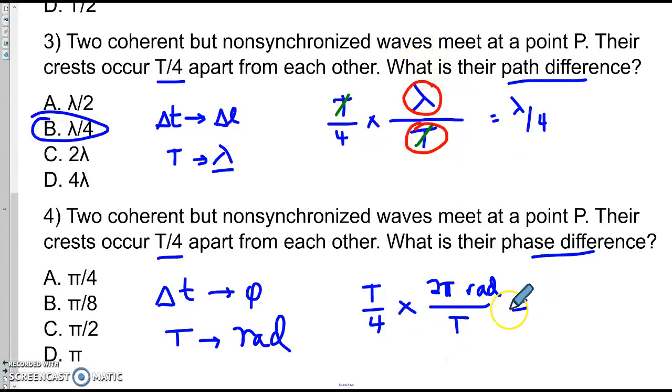And finishing this one, the T cancels out, and we get 2 pi over 4, or pi over 2 radians. Choice C.